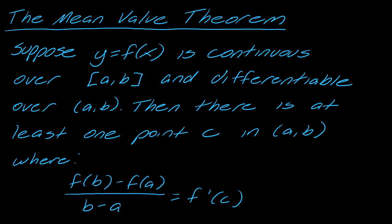So to begin, let's take a look at what the mean value theorem actually says. Suppose y equals f(x) is continuous over the closed interval [a,b] and differentiable over the interior. Then there is at least one point c in that interior where (f(b) - f(a))/(b - a) equals f'(c). So what I would recommend first is just take a second to actually write this down, read it over, and try to figure out what does this actually mean. Can you draw a picture?